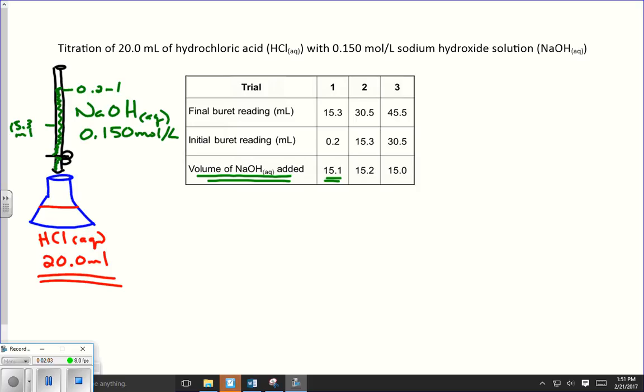We repeated the procedure, starting the same place where we left off. We left off at 15.3, so we started at 15.3, and in this case, 15.2 milliliters was added. And that left us at 30.5, so that's where we started our last trial, and we get 15.0.